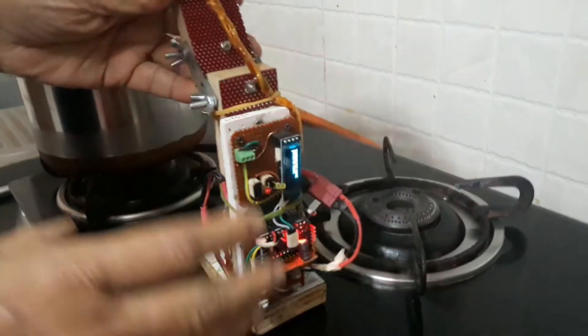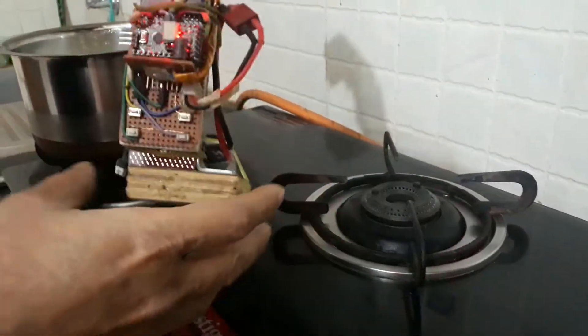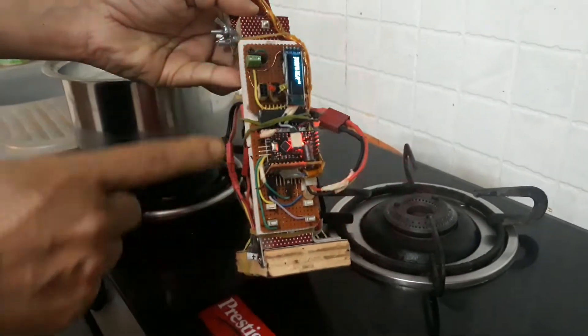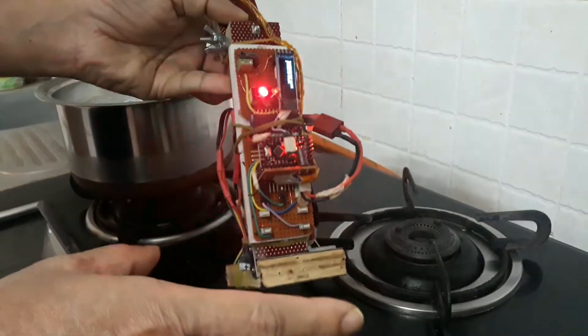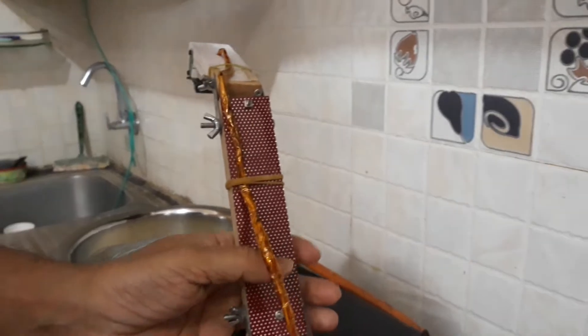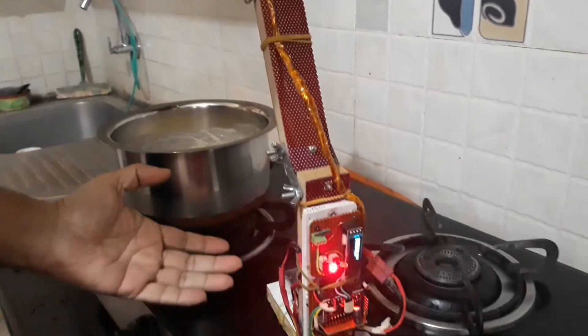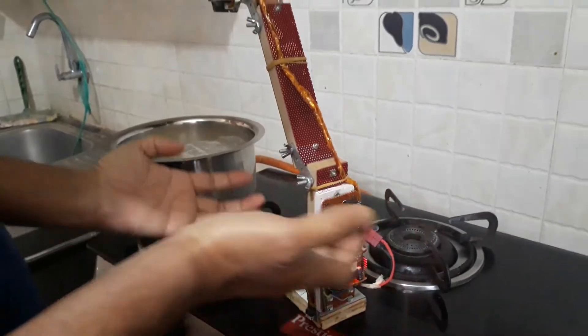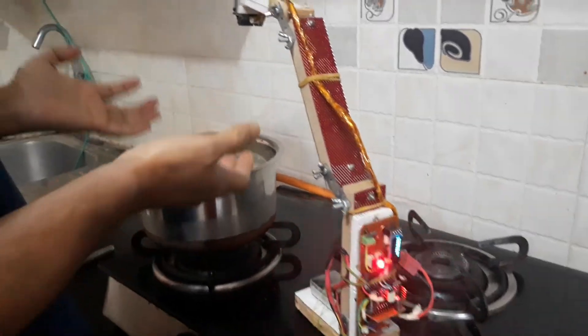The system detects the boiling of milk. This is based around Arduino Pro Mini LED system and there are some set points here, and there is a distance sensor here that detects the boiling of milk. As the milk boils it raises the level and this is the way the system detects the boiling of milk.